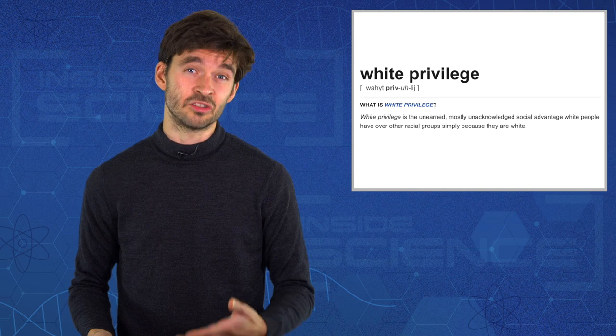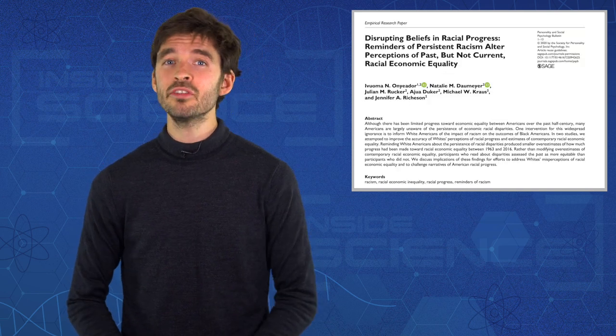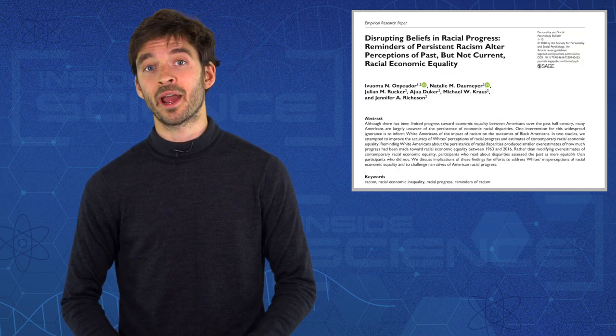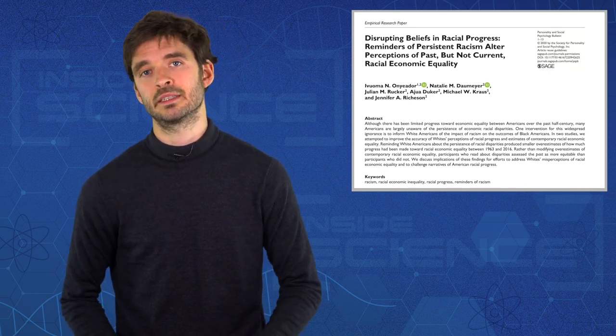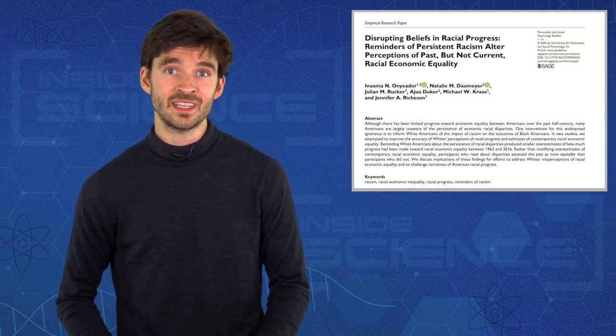Scientists from Yale University tried to change that. They gave a group of white Americans an article about how racial inequalities in wealth have persisted since the 1960s. Then they were asked to rate inequality today and back in the 60s. But the results were unexpected.